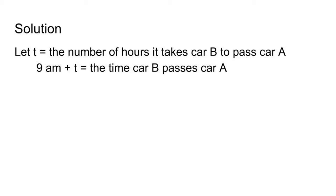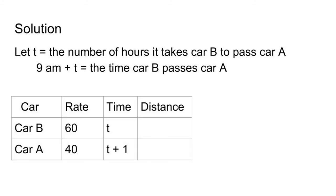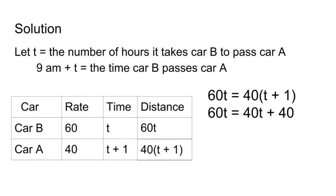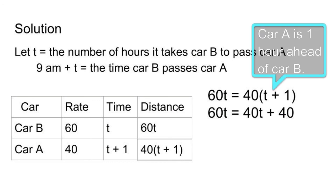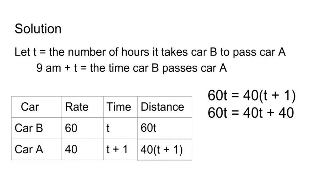Let's use a chart to organize our data. The rate of car B is 60 mph and car A is 40 mph. The distance traveled by car B is 60t and car A is 40 times the quantity t plus 1, which equals 40t plus 40. Our equation is 60t equals 40 times the quantity t plus 1, or 60t equals 40t plus 40.